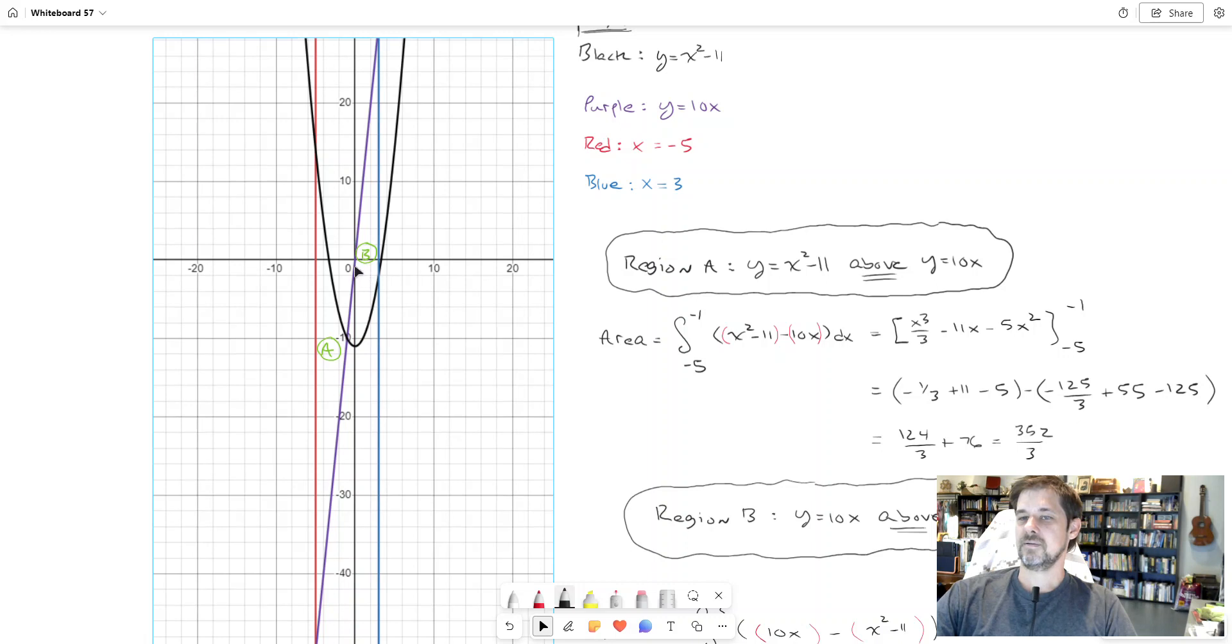The other part would include this region B. Notice if you're in this region B, on top is the purple line, below you is the black parabola, and to the right is the blue line x equals 3. So those are the regions that are between the curves. This region isn't because there's nothing on top of it, this region isn't because there's nothing underneath it. Regions A and B as I have labeled are the only regions contained on all sides by the curves given.